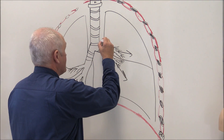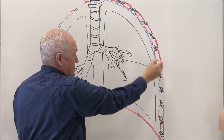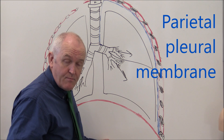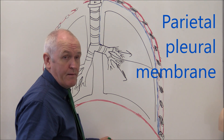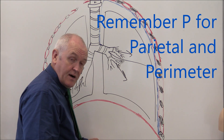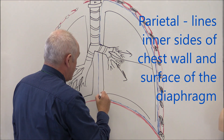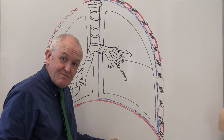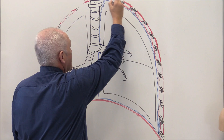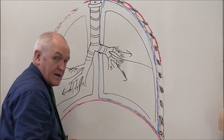First of all, we have the external pleural membrane, which is going to go around the inside of the thoracic cavity, adherent to the inside of the thoracic cage. This outside membrane is the parietal pleural membrane — parietal meaning outside. The parietal pleural membrane also lines the surface of the diaphragm. Each lung is surrounded by its own pleural membrane, so there's a pleural membrane for the right and for the left. So there we have the parietal pleural membrane lining the internal surface of the chest wall and the surface of the diaphragm.